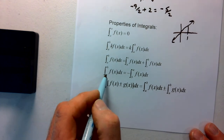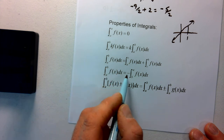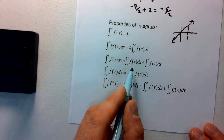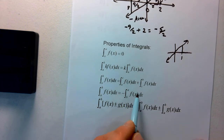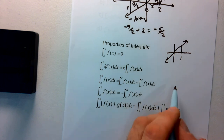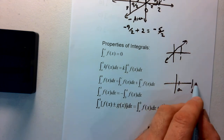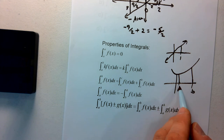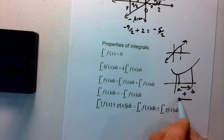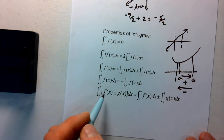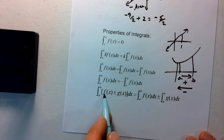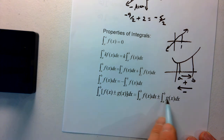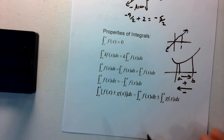The integral from a to b equals the negative of the integral from b to a of f(x) dx. This reverses the upper and lower boundaries. If you integrate from a to b you're going in the positive direction and get a positive value, but going from b to a is the negative direction, giving a negative value. Also, if you have two functions added or subtracted, you can take their integrals separately and then add or subtract the results.